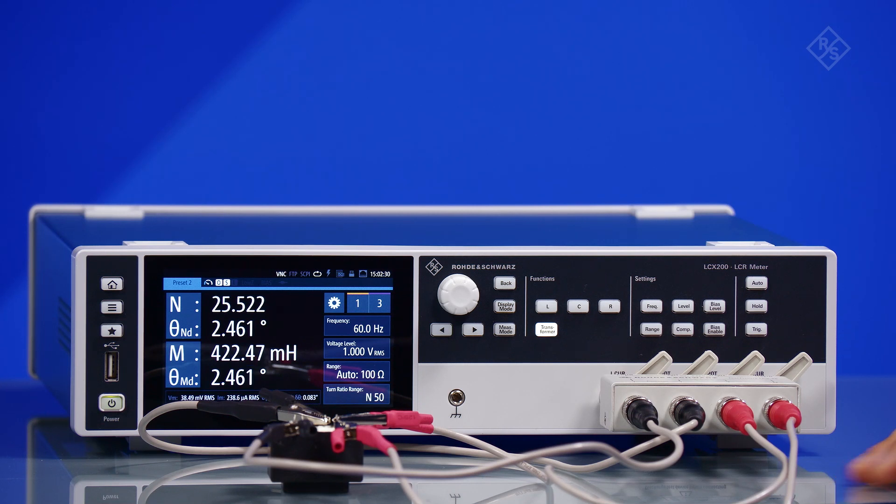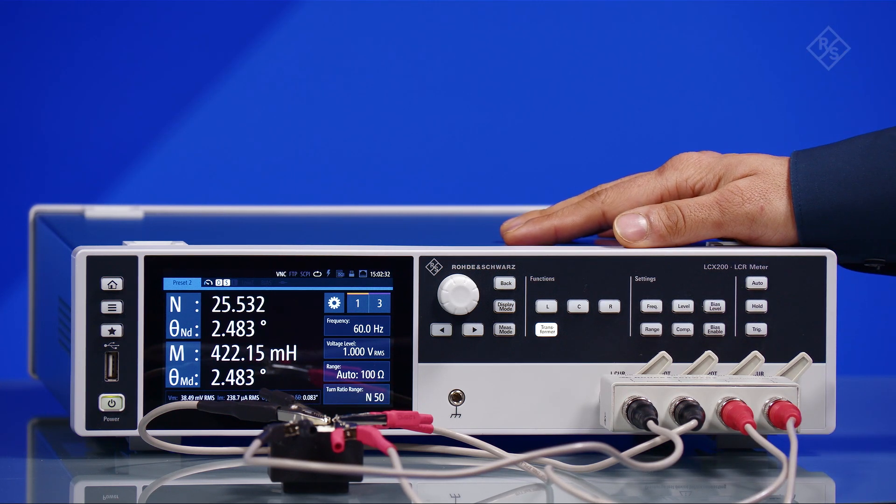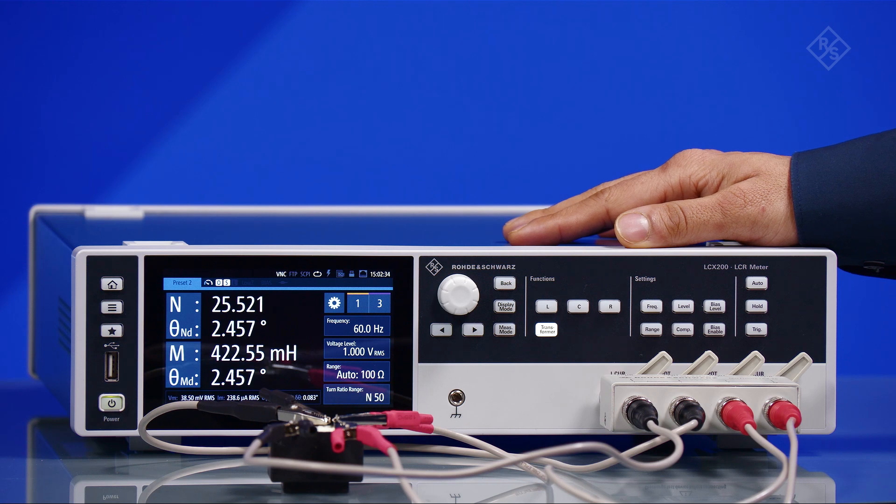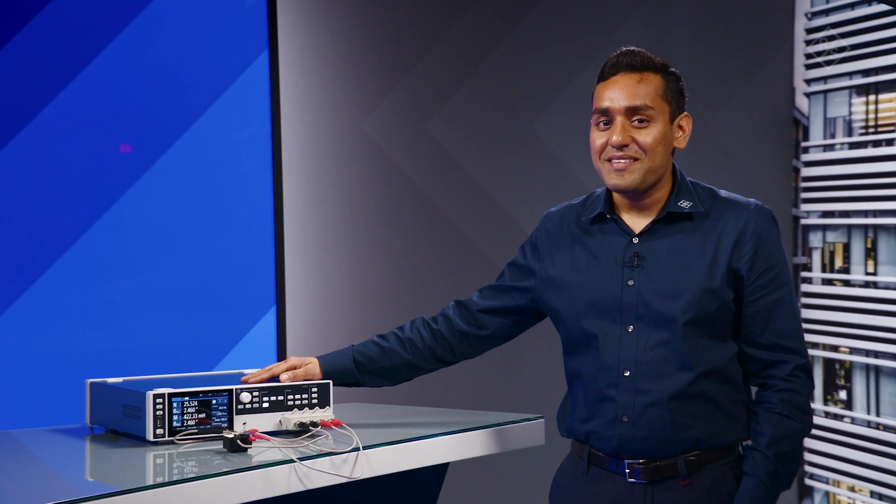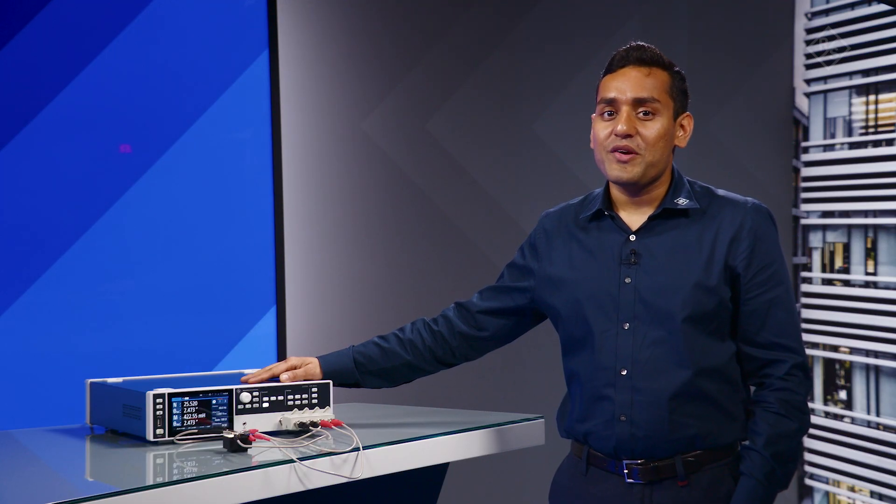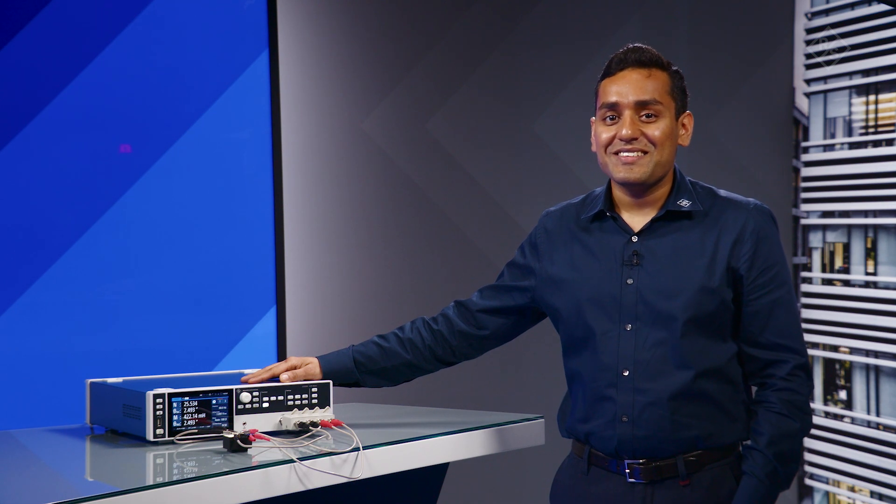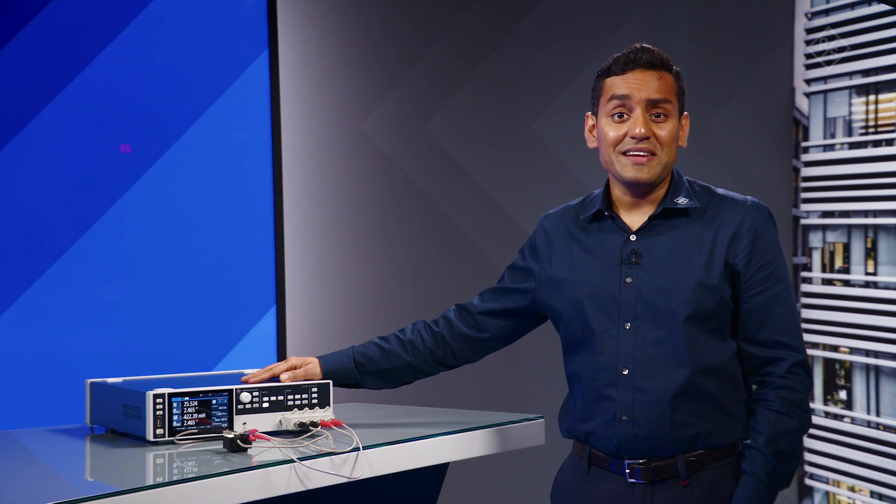The LCX and LCX Z5 test fixture are ideal for the characterization of transformers. This means you can measure primary or secondary inductance, leakage inductance, mutual inductance, turns ratio, and even the interwinding capacitance of the transformer.